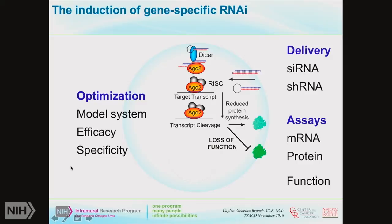You have to optimize all of these features to be sure you have good loss of function. What we've found has always been very critical is the development of really good assays — this applies whether you're using RNAi, CRISPR, or any technology. You need really good assays that assess the quality and quantity of your knockdown at the mRNA, protein, and function level, particularly at the protein level. A lot of the problems we've had over the years have actually been with our antibodies rather than our RNAi reagents.